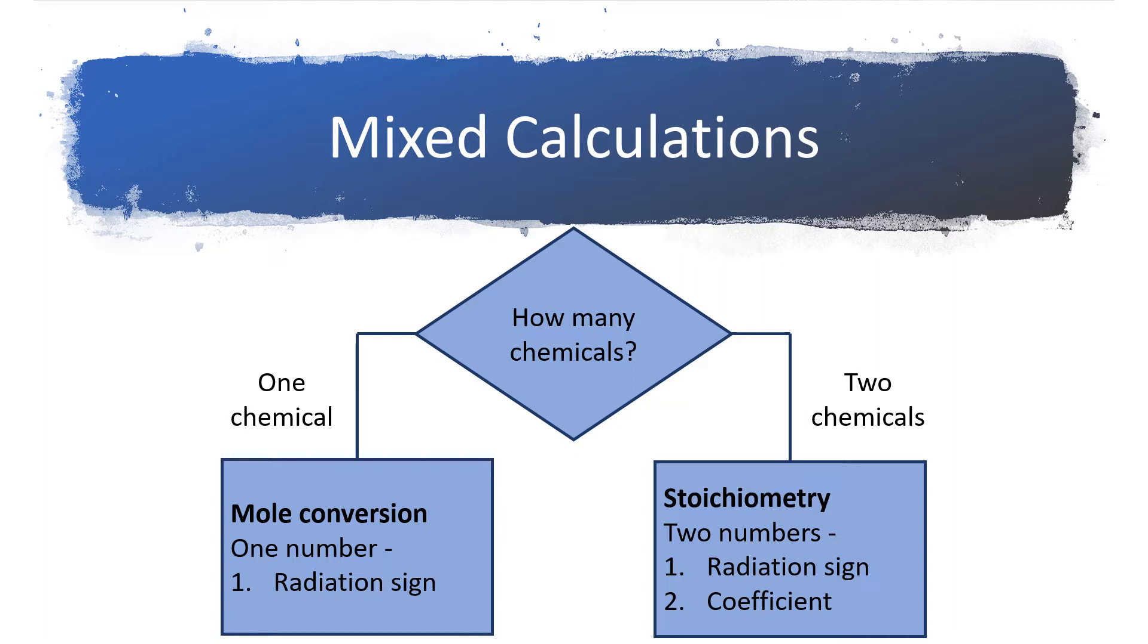But if you have two chemicals, for instance, the problem says methane reacts with oxygen to produce carbon dioxide and water. And the problem says if you start with 25 grams of methane, how many grams of oxygen are needed to completely react? Well, now we're talking two chemicals. We're talking methane and oxygen. So if you're talking two chemicals, when we build our conversion factor, we need to stick two numbers in the top and two numbers in the bottom. The first of those numbers is just like what we did with mole conversions and we're going to pull it from the radiation sign. The second number will be the coefficient from the balanced equation.